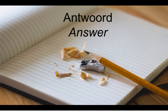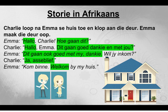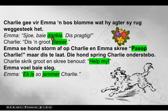Okay, let's see how many words and phrases you could identify. Hallo — Hello. Hoe gaan dit — How are you. Hallo again. Dit gaan goed dankie en met jou — It's going well thanks and how are you. Dit gaan ook goed met my dankie — I'm also well thanks. Ja asseblief — Yes please. Welkom — Welcome. Dankie — Thank you. Plesier — Pleasure. Pasop — Beware, be careful. Help my — Help me. Ek is jammer — I am sorry. Ek is so jammer means I am very sorry.